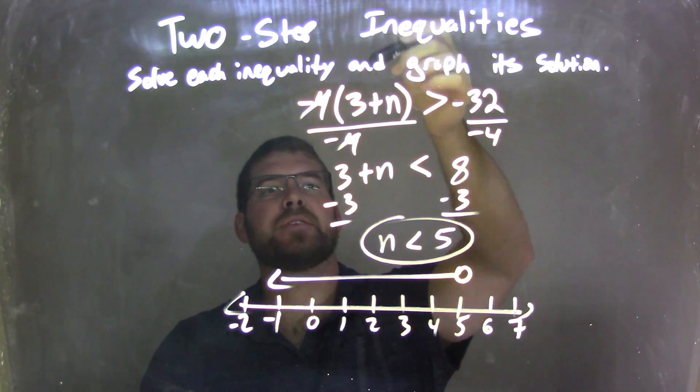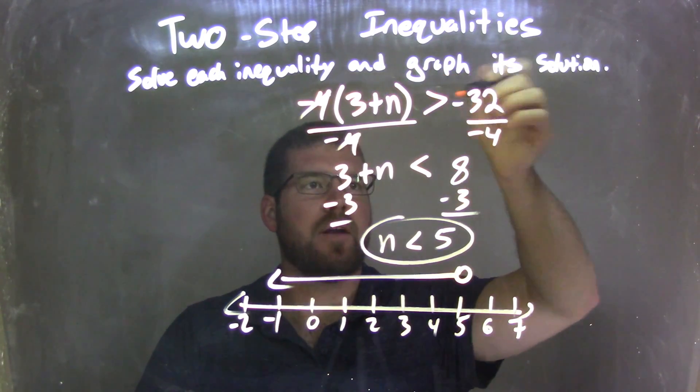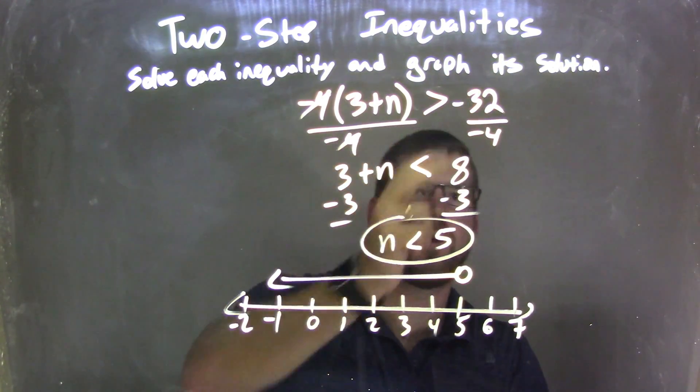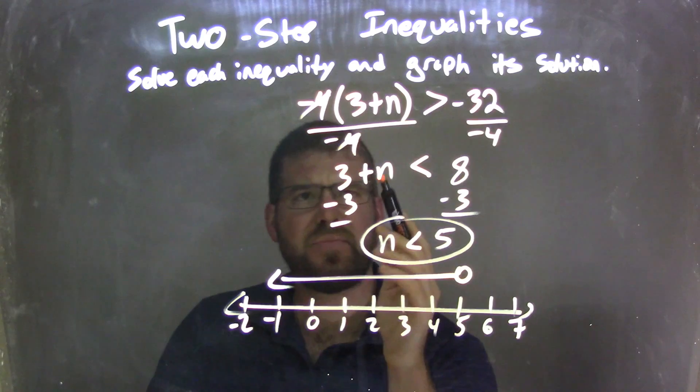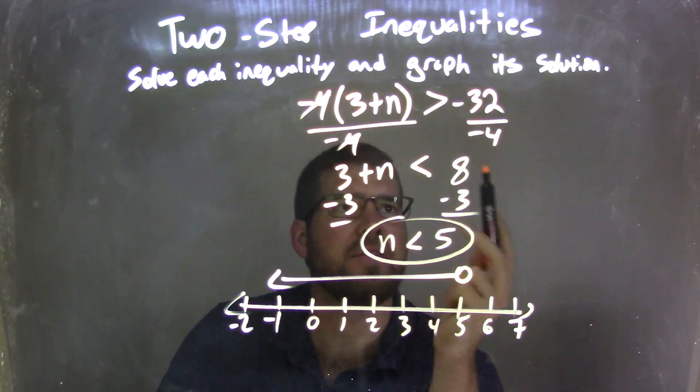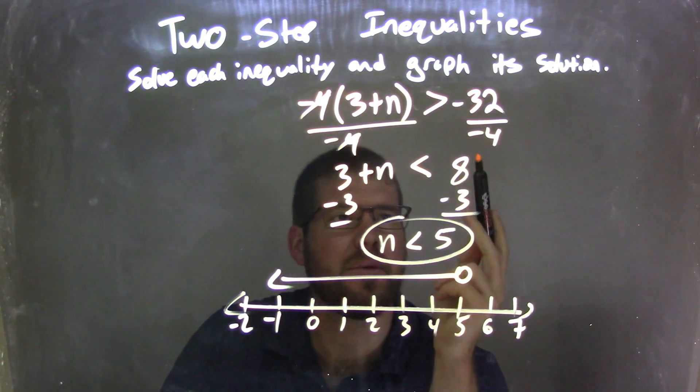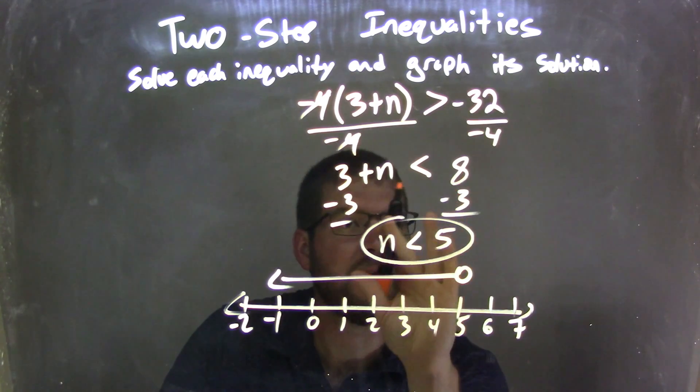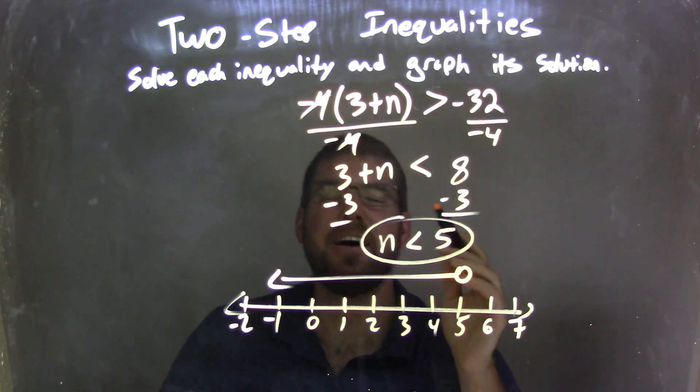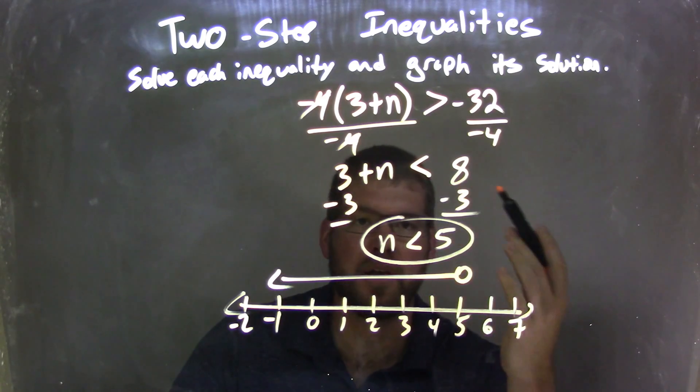So as a recap, we're given negative 4 times 3 plus n is greater than negative 32. I divide it by negative 4 to both sides, giving me 3 plus n on the left, and negative 32 divided by negative 4 to be a positive 8. Now I flip the inequality from greater than to less than sign because we divided by a negative over that inequality.